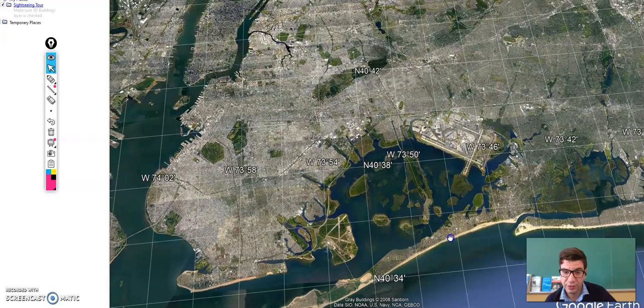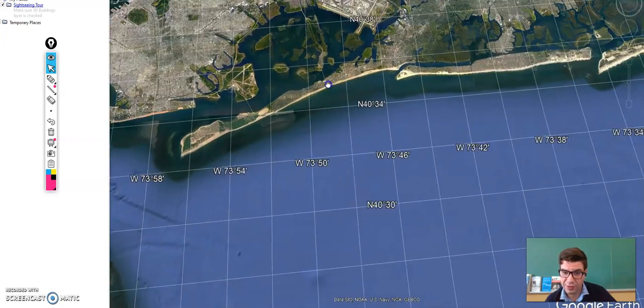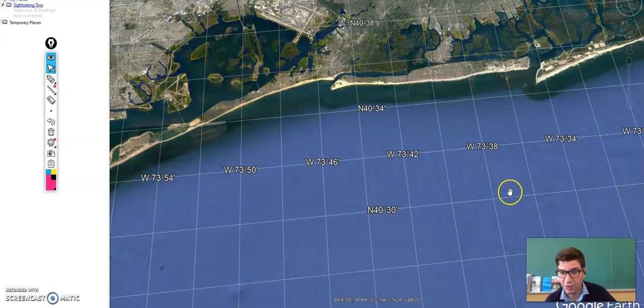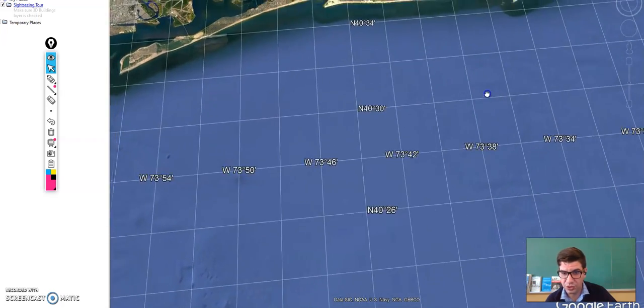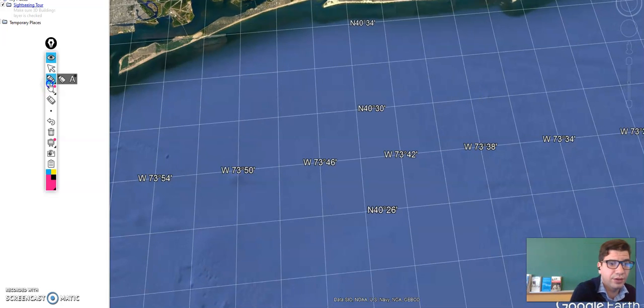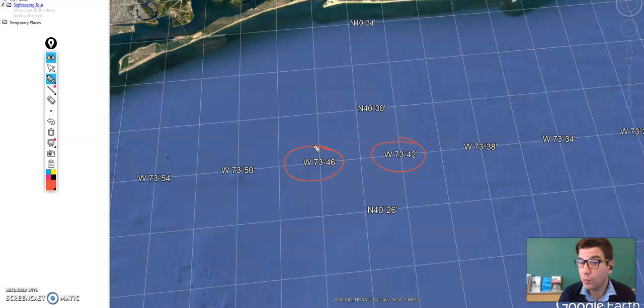So you can see here as I drag the map around, these numbers on the map stay the same. Now I'm just going to go into the ocean here so the numbers are a little bit more clear. Okay, so let's grab a red. Let's just find a random spot. Right here we have West 73° and 42 minutes. The spot right here is West 73° and 46 minutes. West 73° and 50 minutes.